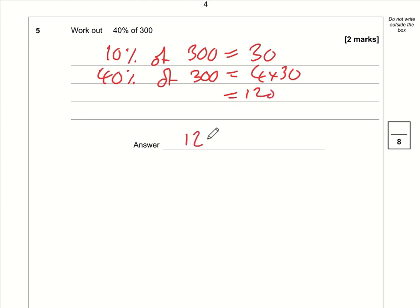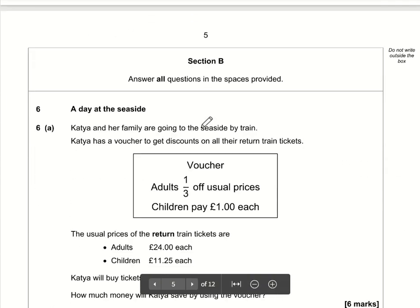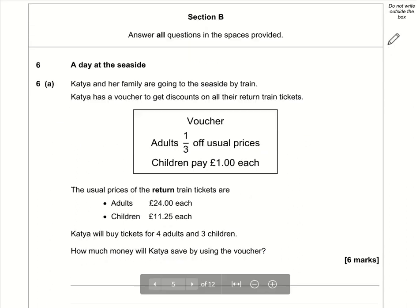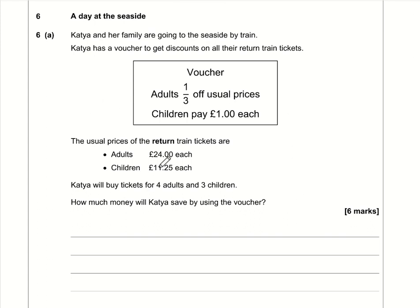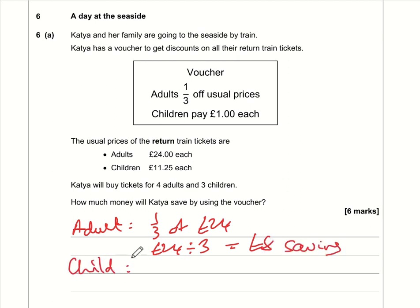On to Section B, Question 6a. I'll work out the savings for adult and child tickets. For adults, the saving is one-third of £24, which is £24 divided by 3, giving an £8 saving. For children, it's gone from £11.25 down to £1, so that's a £10.25 saving.